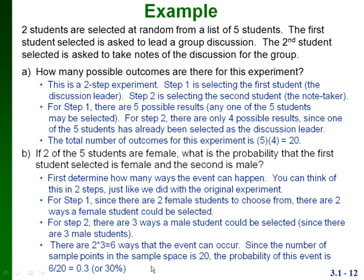Now to get our probability, we take the number of ways our event can happen — which is six — and divide it by the number of sample points in our sample space, which is 20. So we get six divided by 20, which comes out to 0.3, or 30 percent.